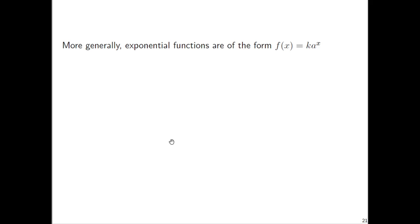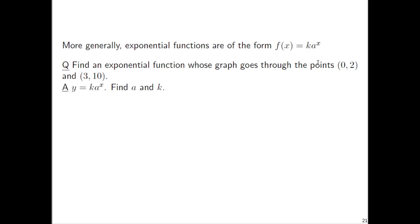Now exponential functions are of the form a to the x but more generally exponential functions are the form f of x equals k times a to the x. Let's find an exponential function whose graph goes through the point 0, 2 and the point 3, 10. If you have y equals k times a to the x then we just need to find what k is and what a is.